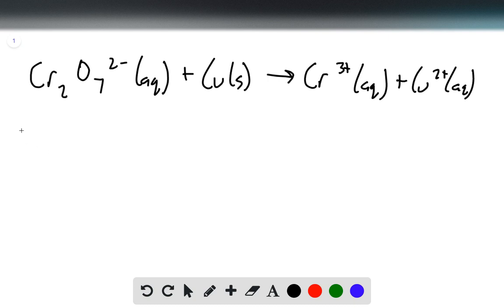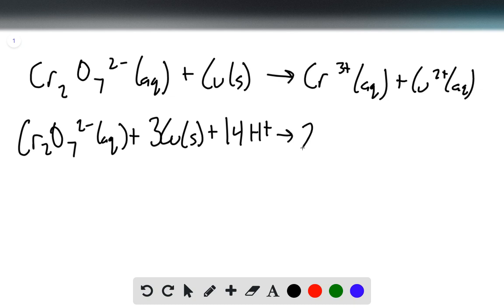The first thing we do is balance our equation. So that's going to be Cr2O7^2- (aq) + 3 Cu (s) + 14 H+ → 2 Cr^3+ (aq) + 3 Cu^2+ (aq) + 7 H2O (l).